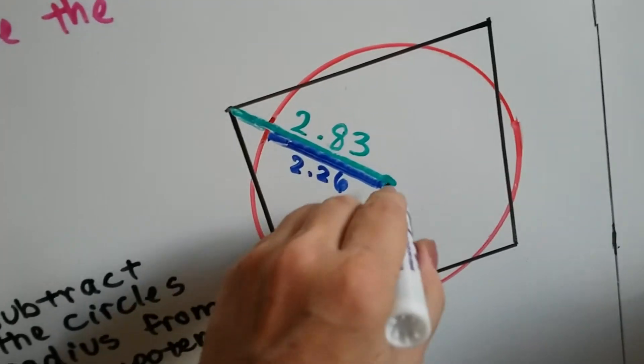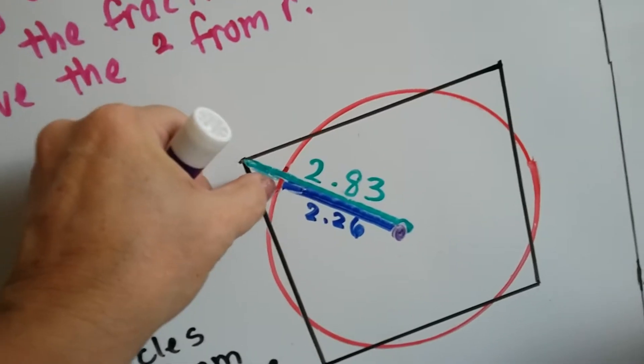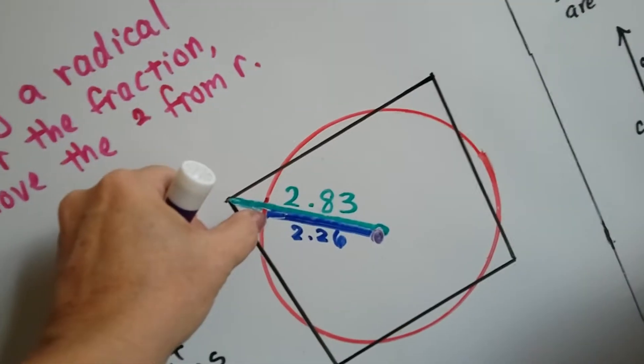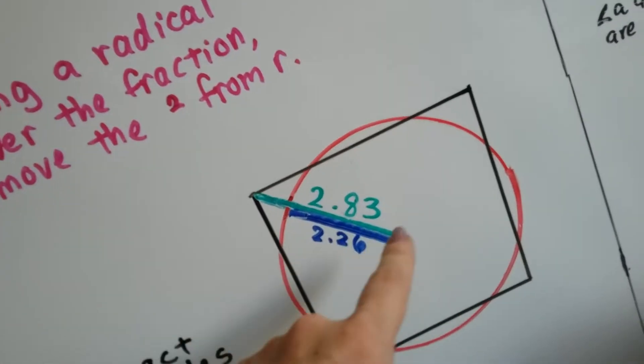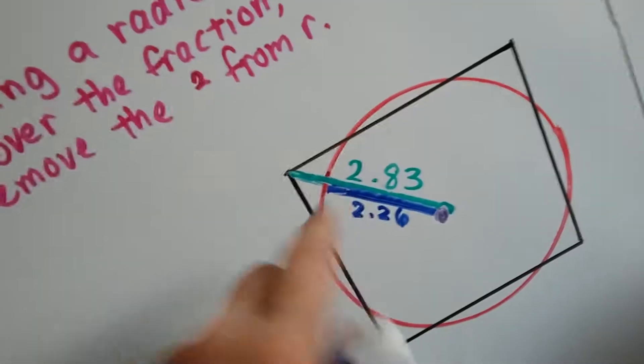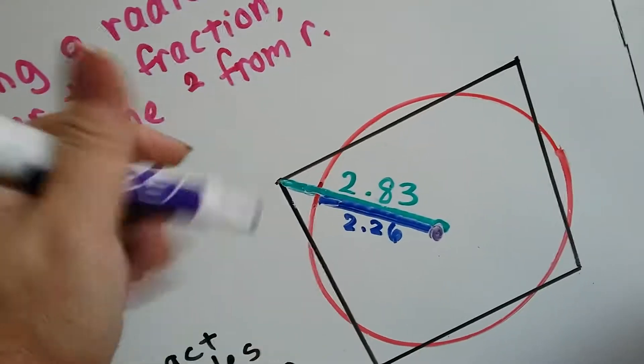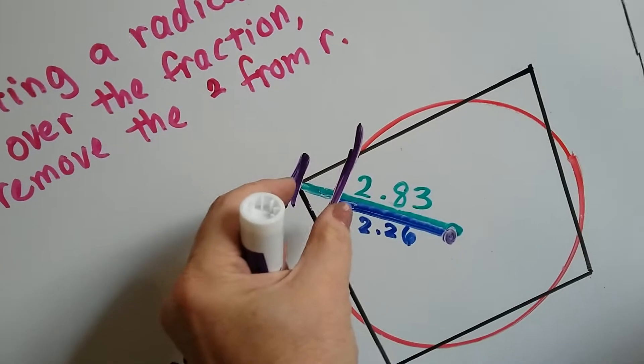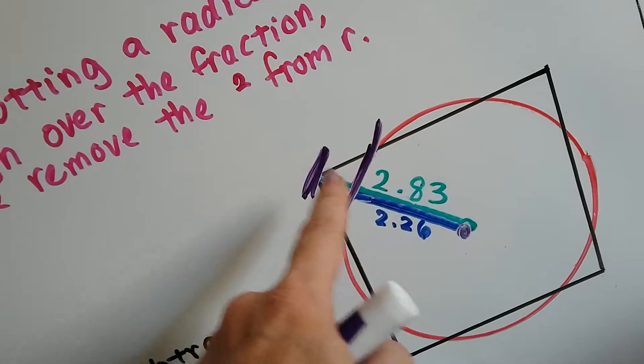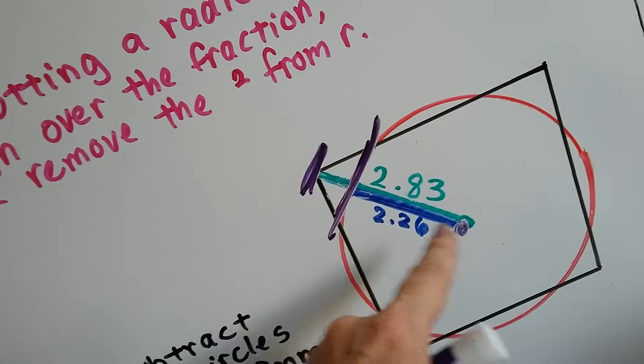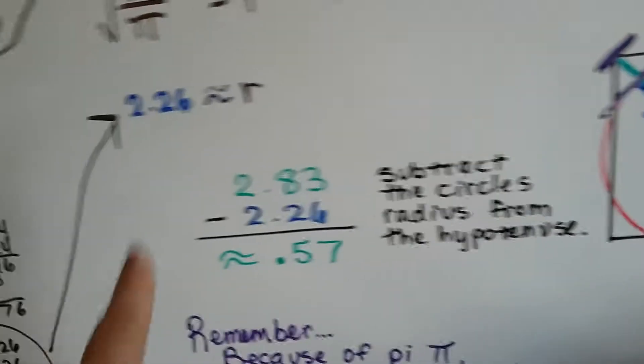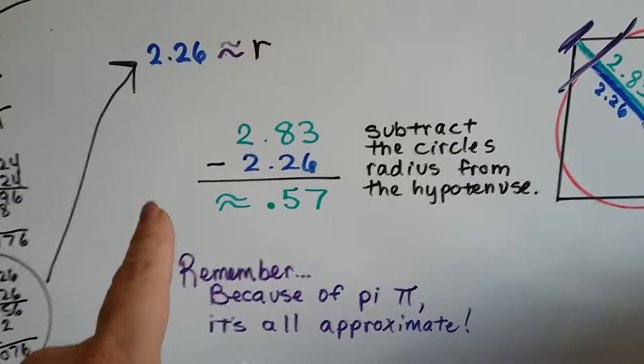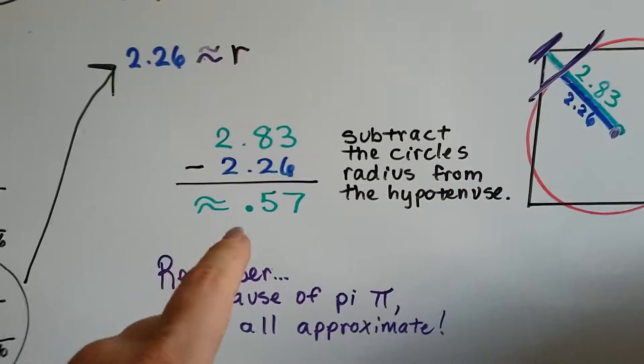So now we've got this 2.26 is the radius of the circle. That's from the center here to the red edge. That's the radius of the circle. Remember, it's half the diameter. And we know that the hypotenuse was 2.83. Remember, we figured that out before? So now we've got these two measures. We're trying to figure out this little piece right here. We're trying to figure out between here and here. This space.